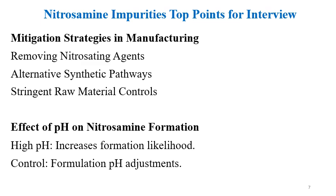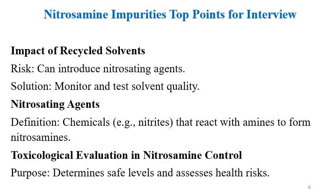Mitigation strategies for nitrosamines in manufacturing include removing nitrosating agents, using alternative synthetic pathways, and applying stringent raw material controls. Regarding the effect of pH: acidic pH is generally favorable for nitrosamine formation, while basic or neutral pH does not promote formation and can reduce it. Formulation pH adjustment is an important control measure.